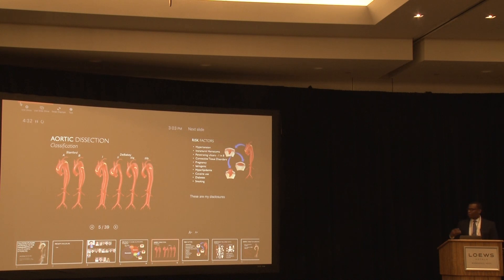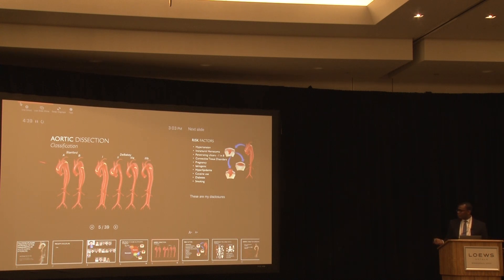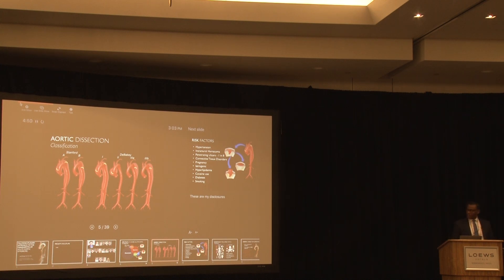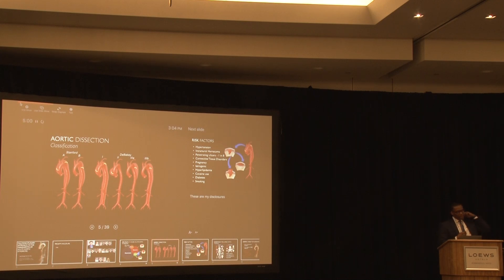A patient with a Stanford Type A dissection has a dissection that starts right at the aortic root — involving the valve, the arch — and goes all the way down to the descending aorta. Patients with Type B aortic dissection have a dissection that starts at the left subclavian artery, which supplies the left arm and the back of the head on the left side. That's where the dissection begins.